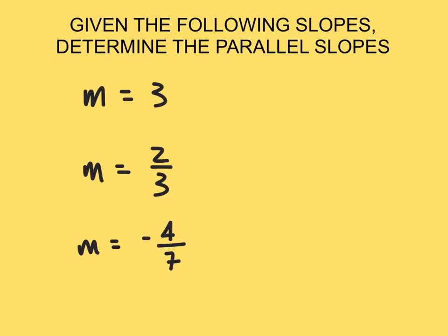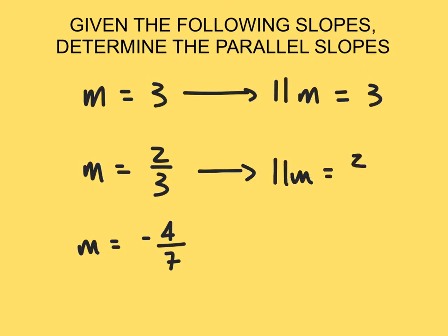Given the following slopes, I want to determine the parallel slopes. Remember, parallel lines have the same slope. So when I write out my parallel slope, I just have the same slope. If I have a slope of three, then a parallel slope is going to be three. If I have a slope of two thirds, my parallel slope is going to be two thirds. If my slope is negative four sevenths, my parallel slope is going to be negative four sevenths.